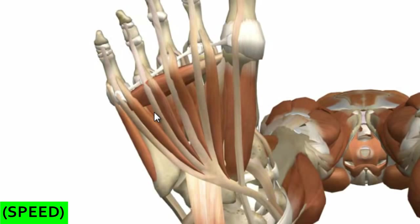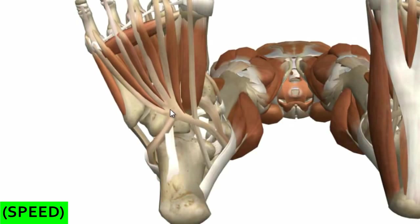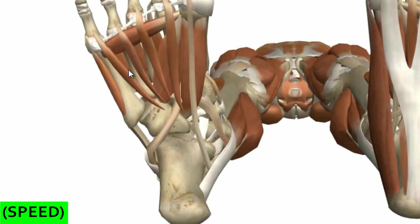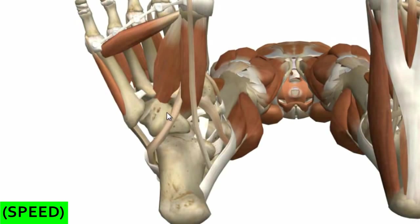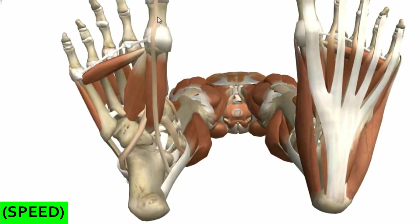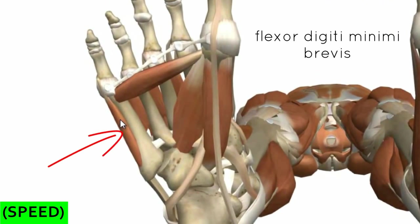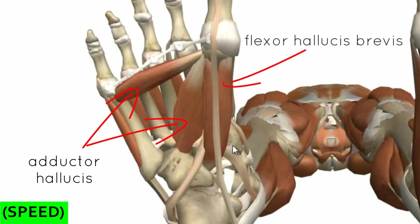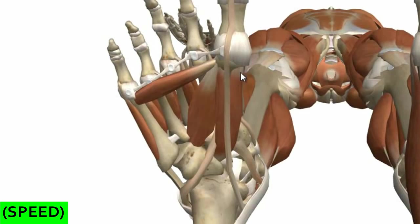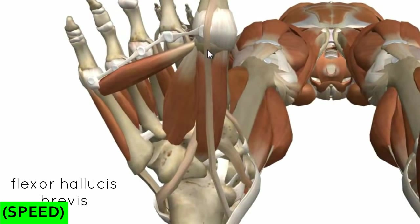So those are the two muscles in the second layer. Remember: second layer, two muscles; third layer, three muscles. The three muscles in the third layer are associated with the little toe and the big toe: with the little toe you've got the flexor digiti minimi brevis, and related to the big toe you've got the adductor hallucis and the flexor hallucis brevis. We'll start with the flexor hallucis brevis.